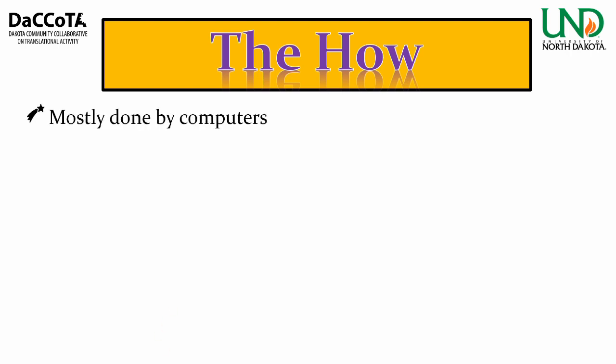Now let's turn to how these things work. Resampling is mostly done on a computer, though a lot of these things you could theoretically do by hand, other than Monte Carlo. You can do this in all sorts of programs — R, SAS, Python, etc. For the worked examples I'll show later, I'll be using R, though you can certainly use whatever statistical tools you prefer.